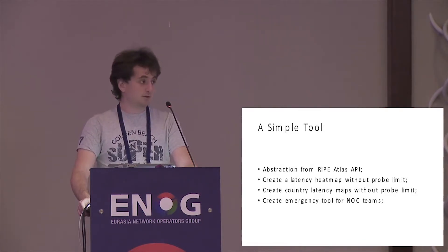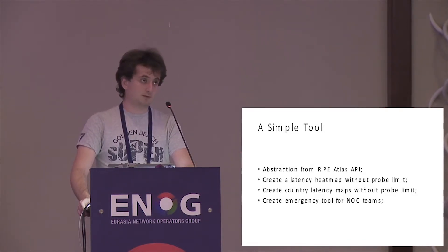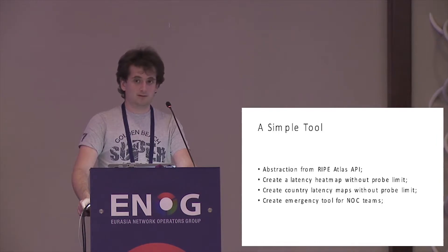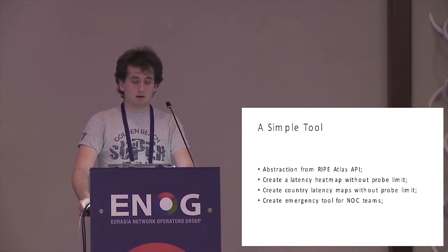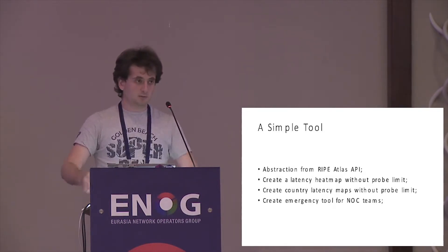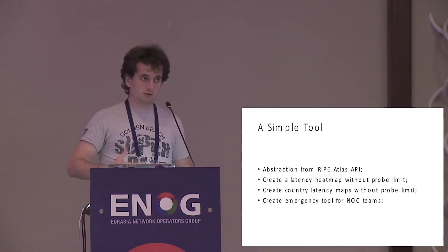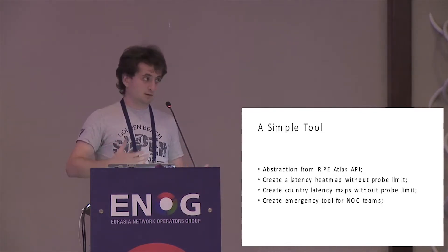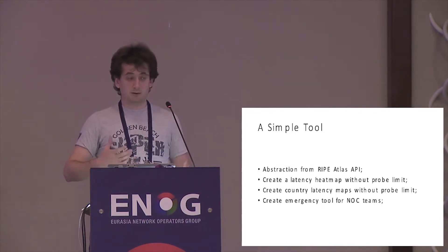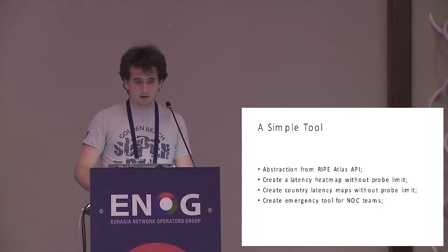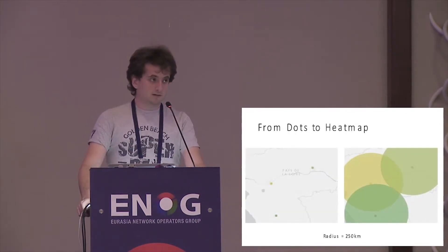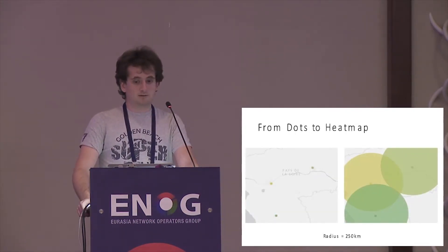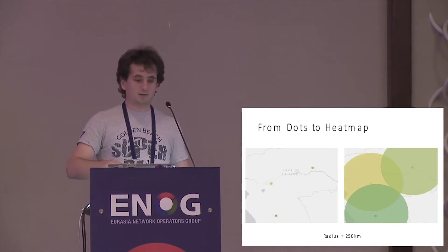RIPE Atlas probes — there are a lot of them, but they have some limitations. You will have only a one-time experiment with not more than 1,000 probes. And therefore, we wanted to create a simple tool, quite easy to use. Accordingly, the first thing we made was a heat map.